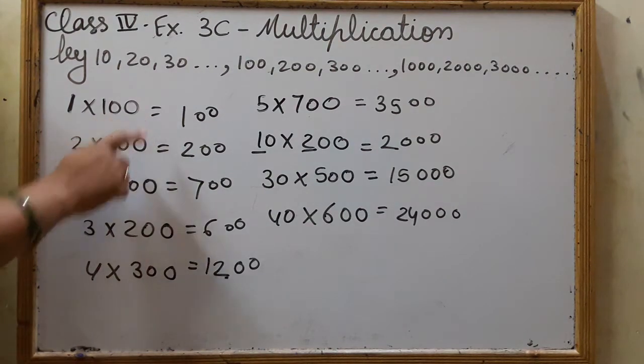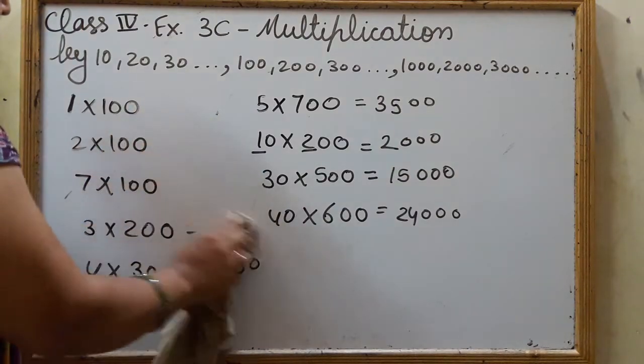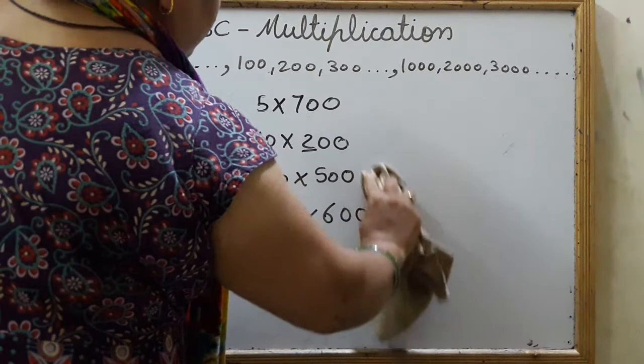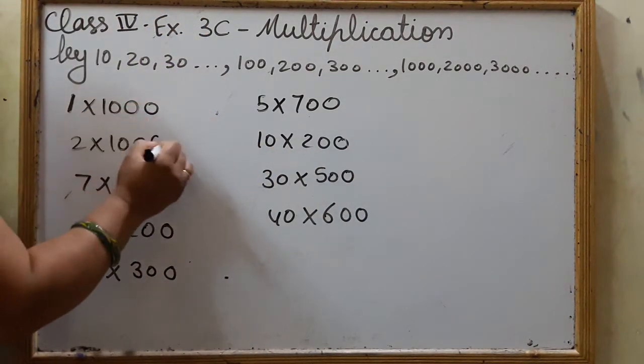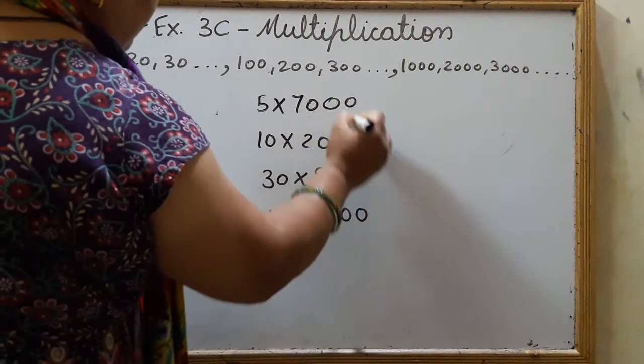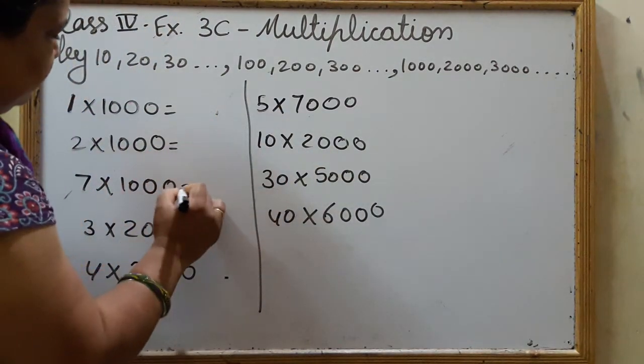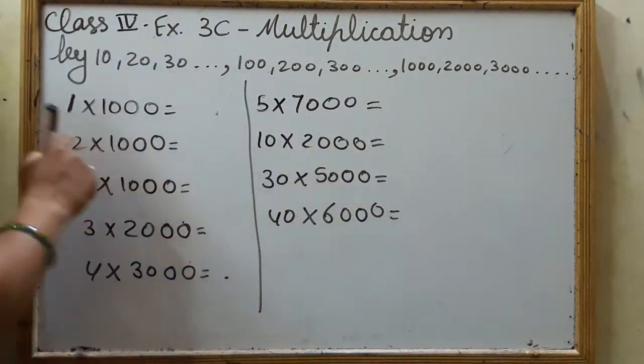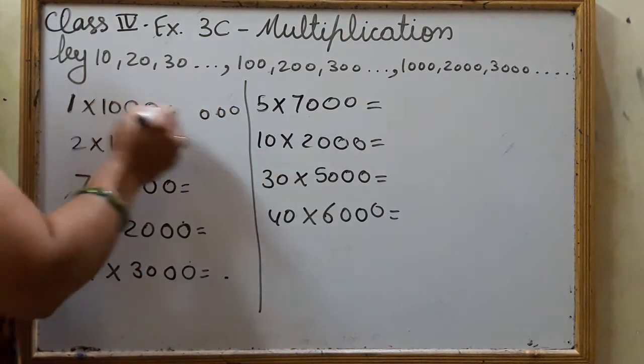Now, what if we multiply by 1000? What if we multiply the same numbers by increasing 1 more zero? Now, I think you have an idea. So, 0 0 0 and 1 1s are 1.